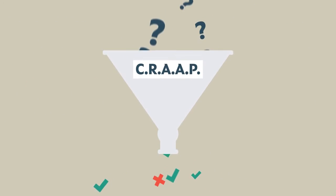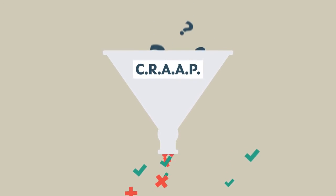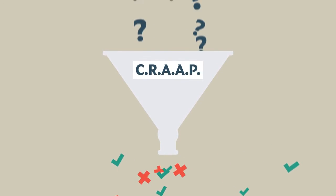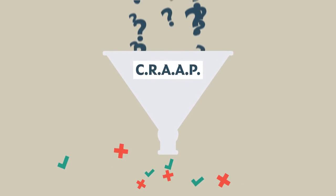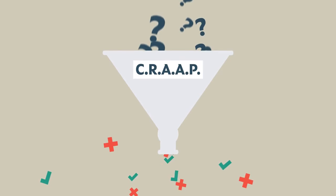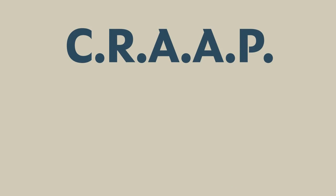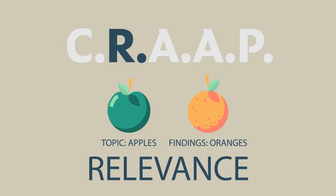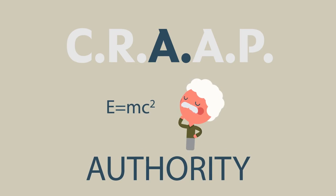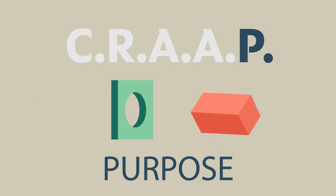One technique you can use is the CRAP test. The CRAP test is a list of questions to help you decide whether or not the information you find is credible and appropriate to use. CRAP stands for currency, relevance, authority, accuracy and purpose.